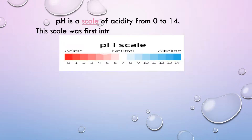What is pH? pH is a scale of acidity from 0 to 14. A scale of acidity measures how much hydrogen ion is present in a solution. This scale was first introduced by Soren Sorensen.